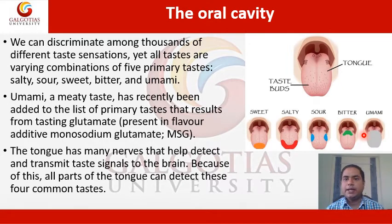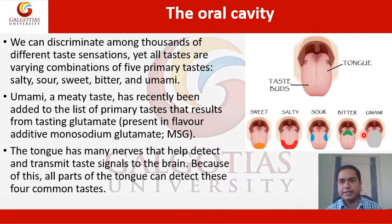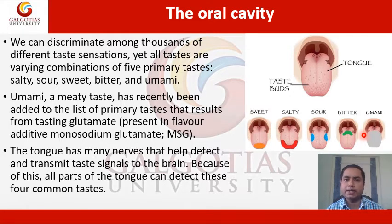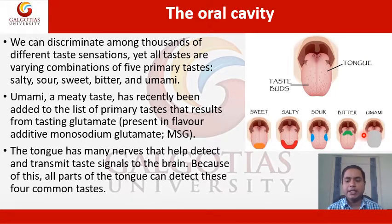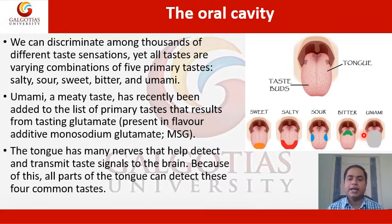Umami is present in the flavor-additive monosodium glutamate, also called MSG. It is primarily used in Asian country food markets. The tongue has many nerves that help detect and transmit taste signals to the brain. Because of this, all parts of the tongue can detect these common tastes — there is no such thing as taste mapping.